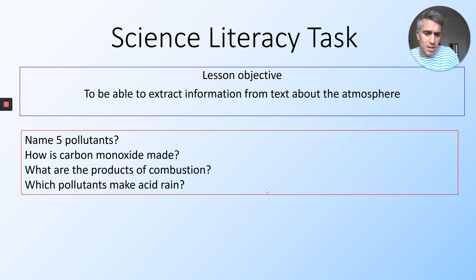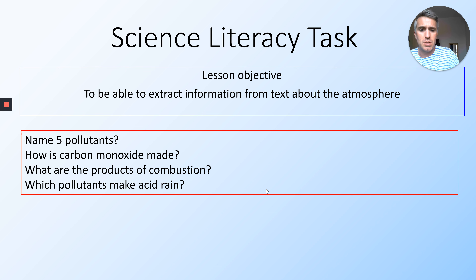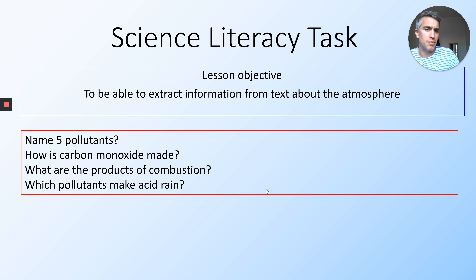I thought it an opportunity to read it to you, maybe make it easier, and I can highlight some things. Let's start off by answering a few questions: can you name five pollutants? Can you explain how carbon monoxide is made? What are the products of combustion of fossil fuels? And which pollutants make acid rain? Pause when you're done, then unpause and let's go on.